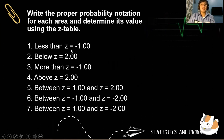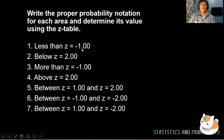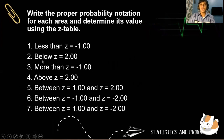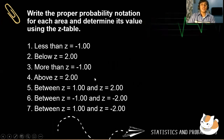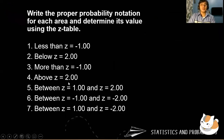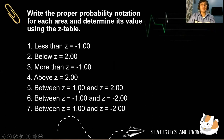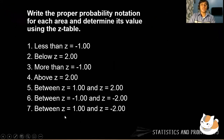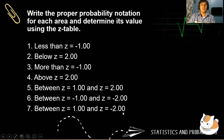First: less than z equals negative one. Below z equals two. More than z equals negative one. Above z equals two. Between z equals one and z equals two. Between z equals one and z equals negative two.